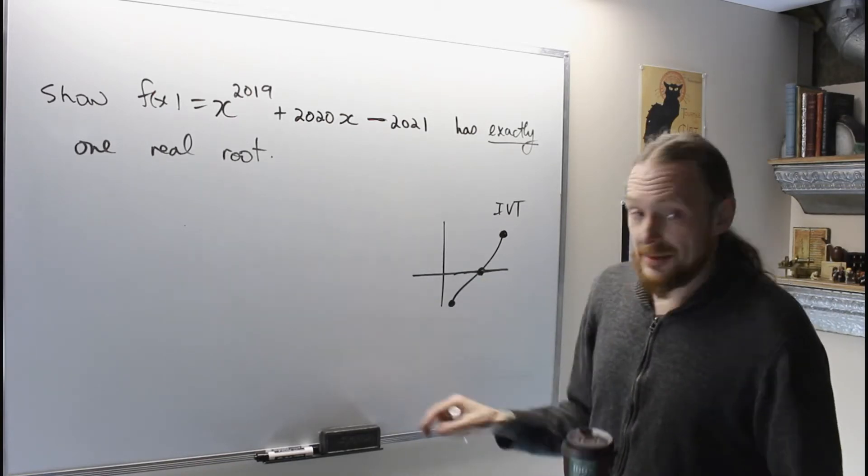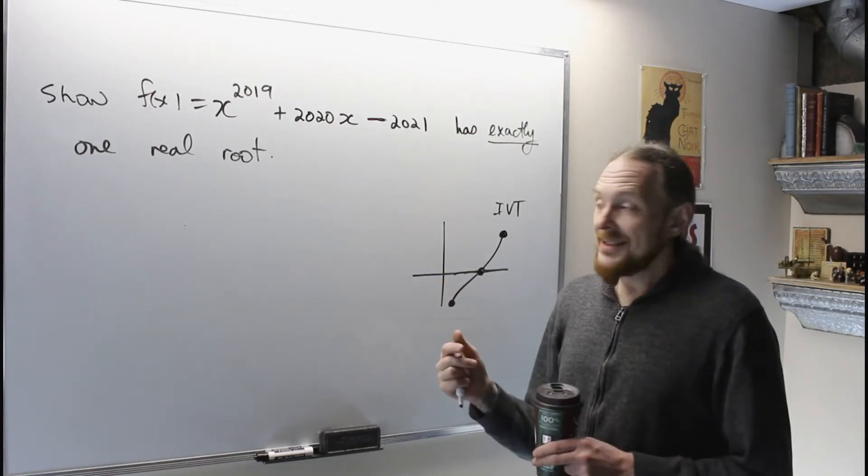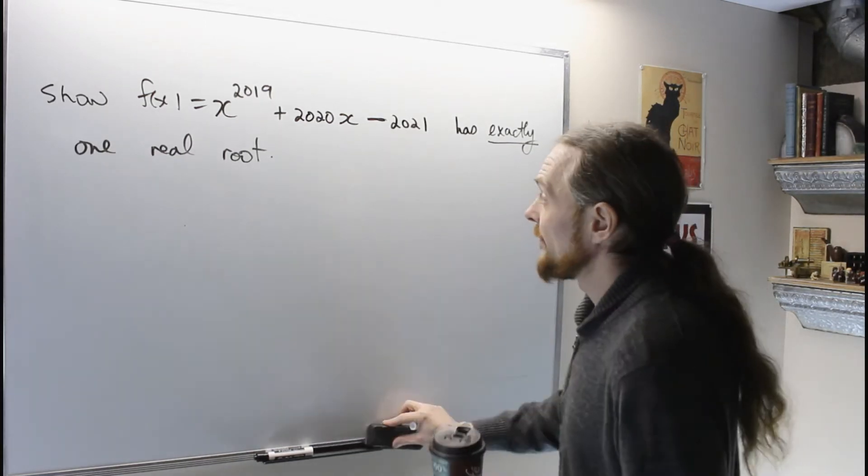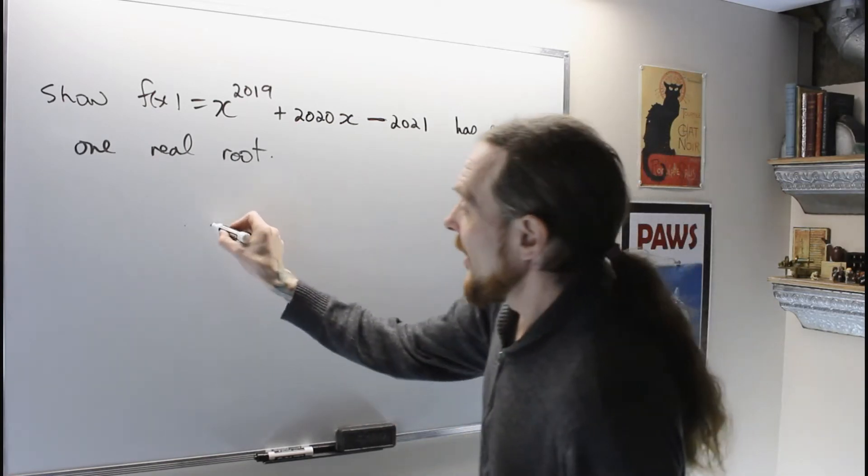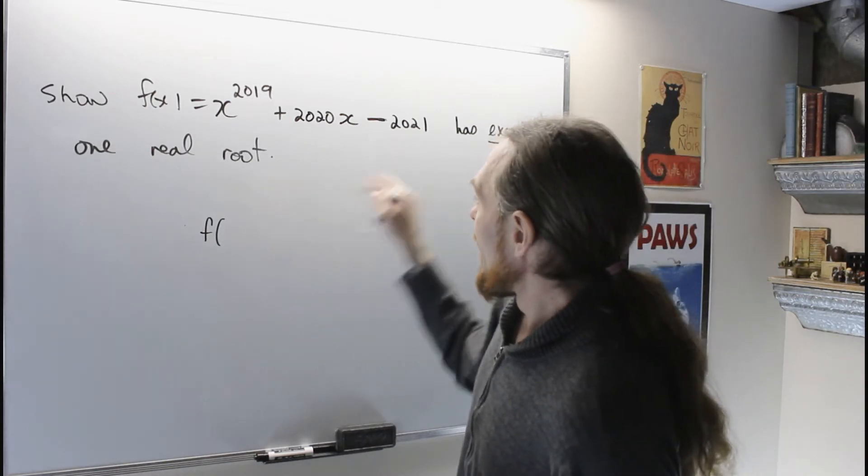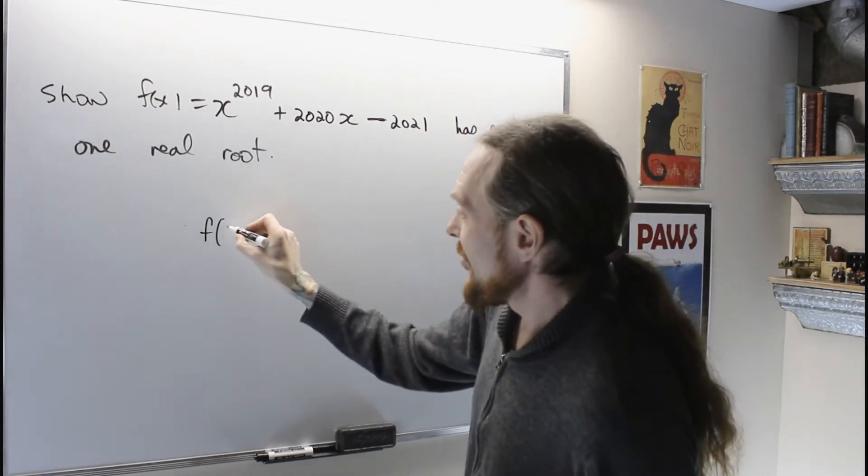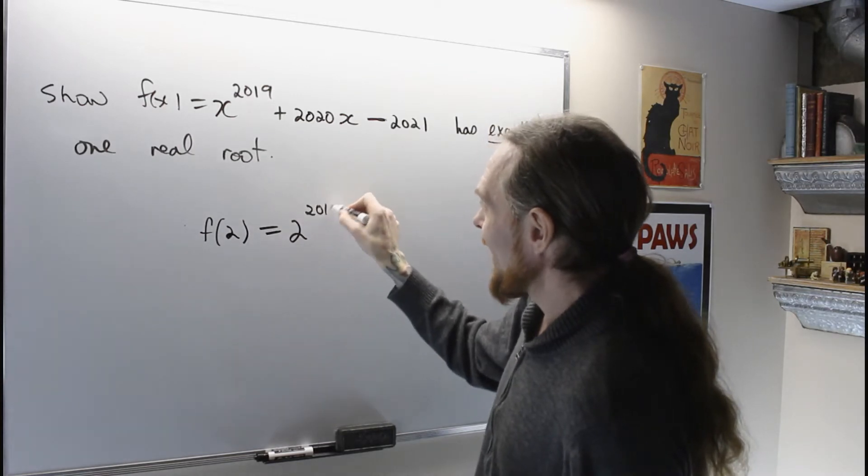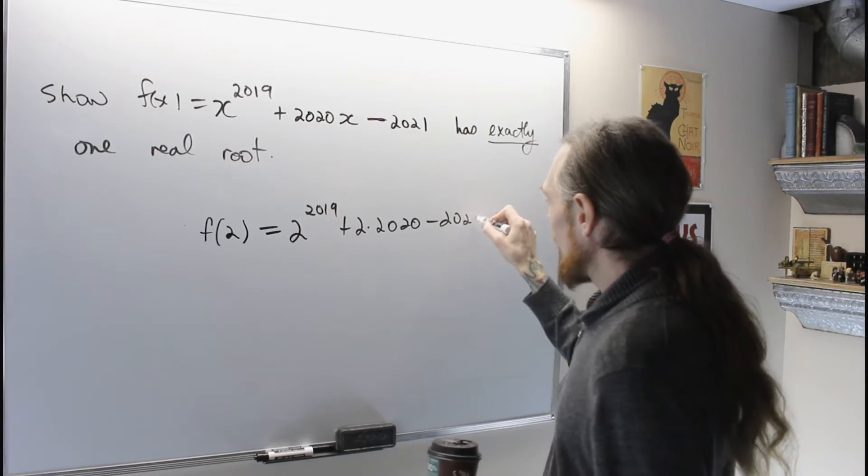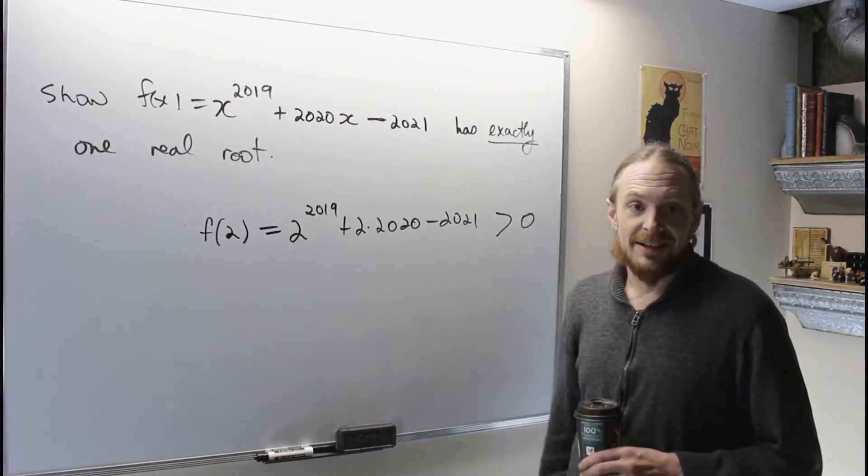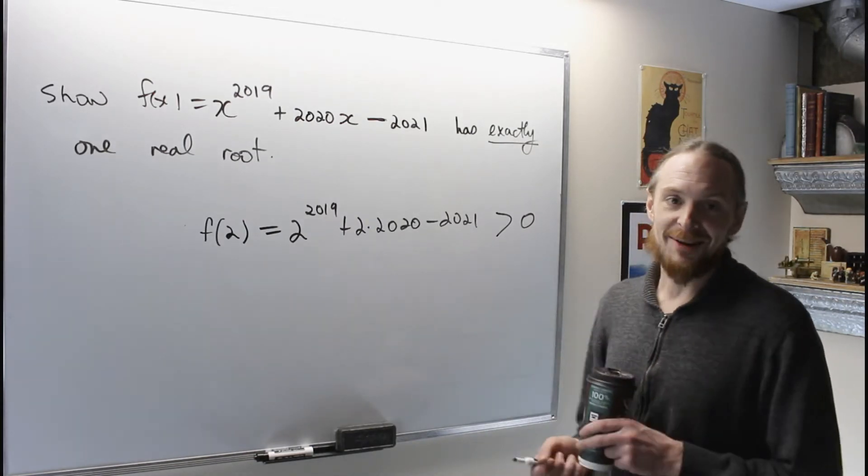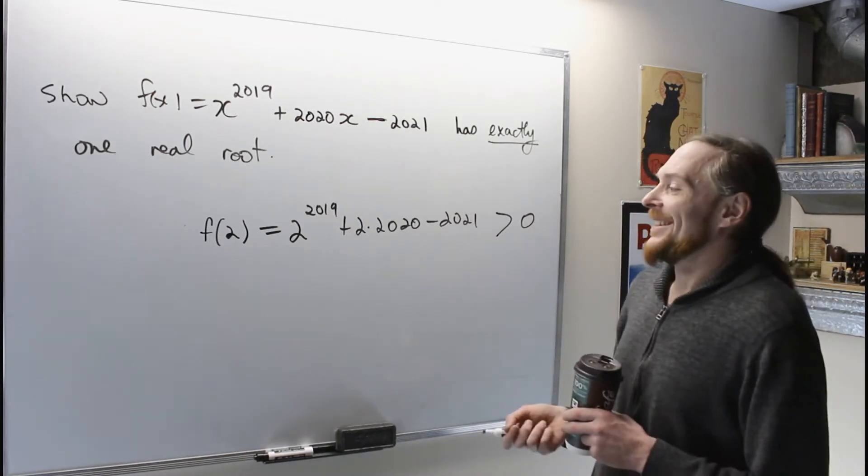So that's what we're going to use and this one's relatively easy. All I have to do is find a positive value and a negative value and we're in business. So, if I look at this and be lazy, if I put 2 in there I'm going to get 2 to the 2019 plus 2 times 2020 minus 2021, which I hope you're convinced is a positive number. I'm not calculating what that is. I don't know how to calculate it, your calculator won't even do it, it'll say error probably. That's a lot of atoms.